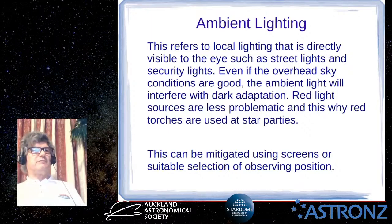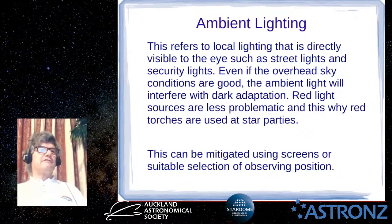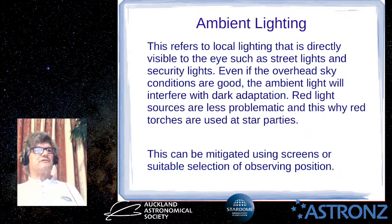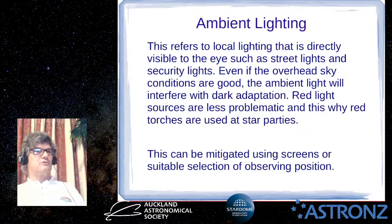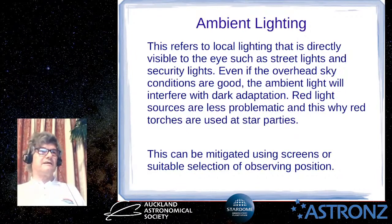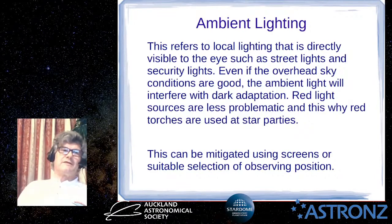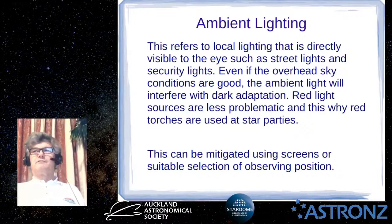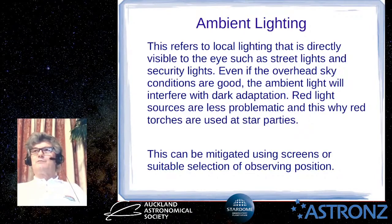Regarding ambient lighting — this is your local lighting, street lights, security lights — even with good overhead sky it can cause problems. Red light sources are less problematic, which is why at a star party we tell people to use red torches or cover their torch with red cellophane — you can still see to move around without ruining people's dark adaptation. You can mitigate ambient lighting to some degree using screens to block street lights, using trees, or moving your telescope to a better position.